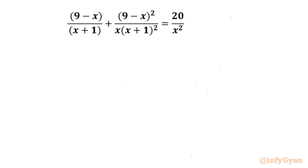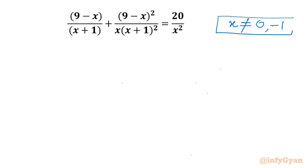Let us get started by writing that the denominator cannot be 0. So we will restrict 0 and negative 1 from our answer list. The denominator has (x+1), so negative 1 is excluded; the denominator has x, so 0 is excluded.